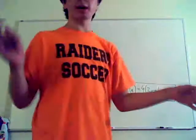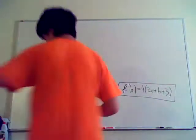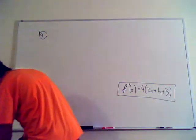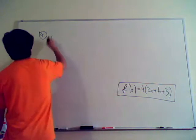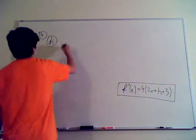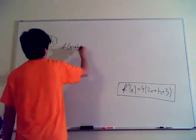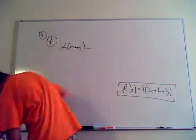Alright, so I messed up on the video, so now I have to go back. I think this is where we left off. So now we are at d5, or whatever, which is f of x plus h minus 3.